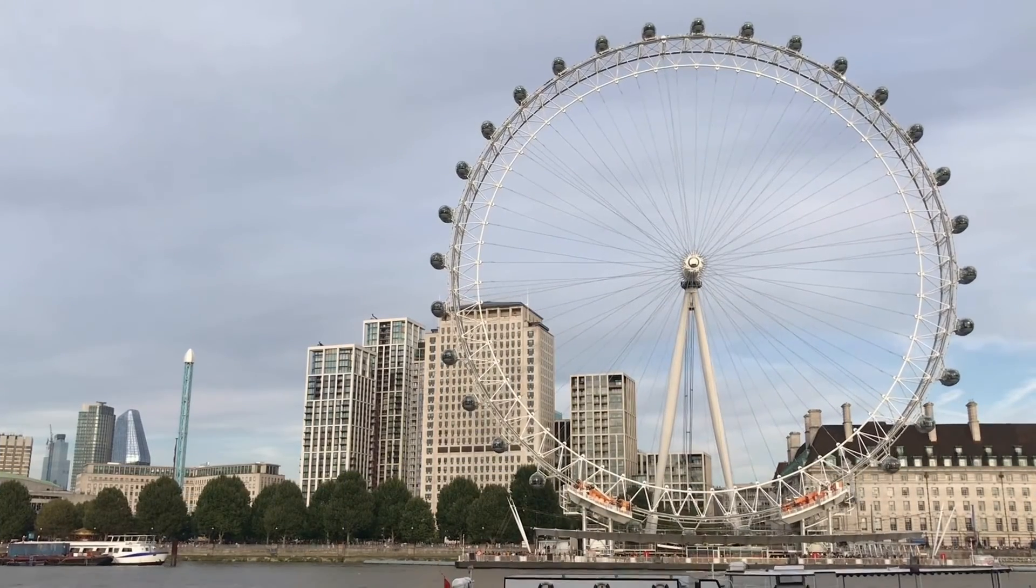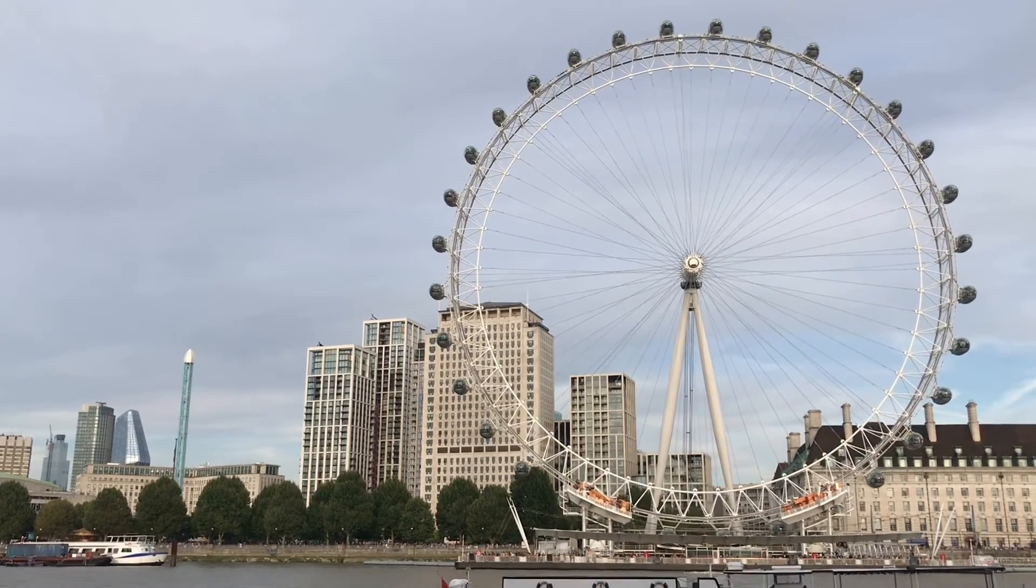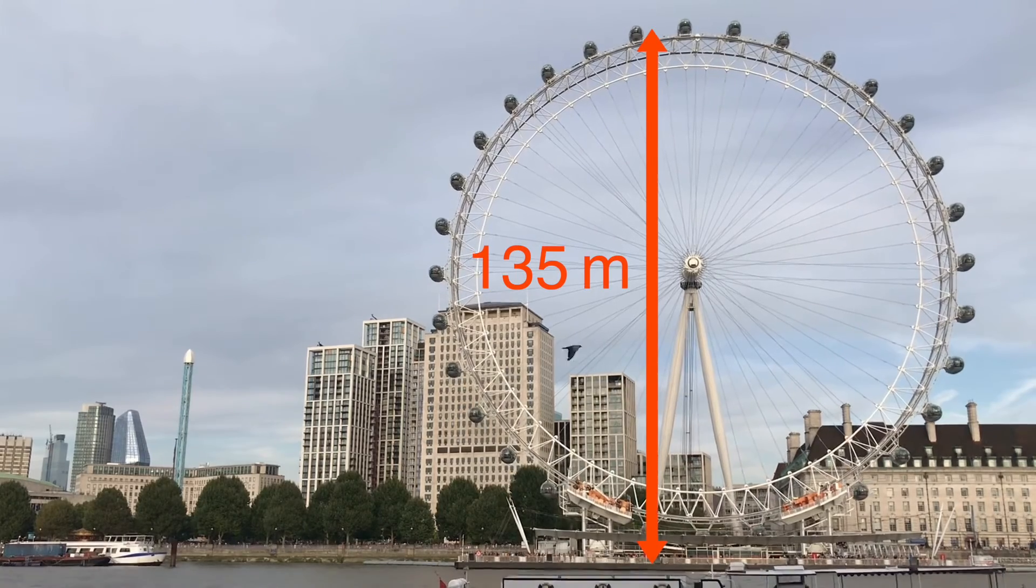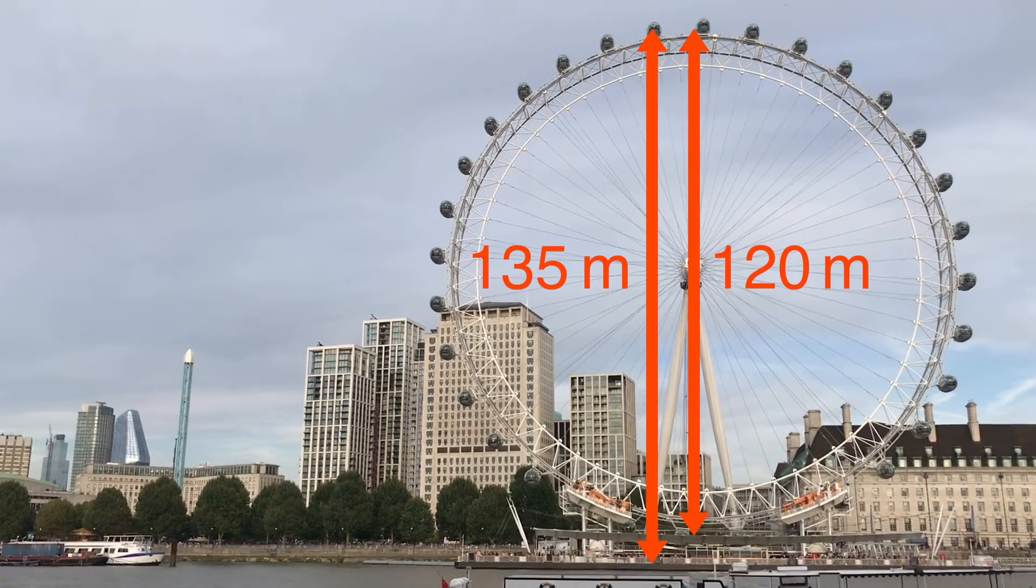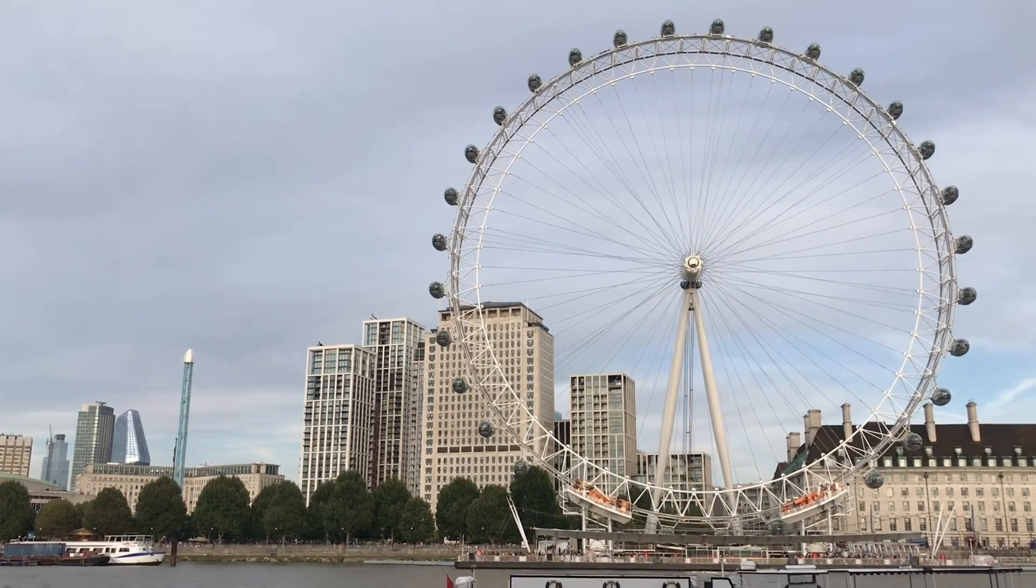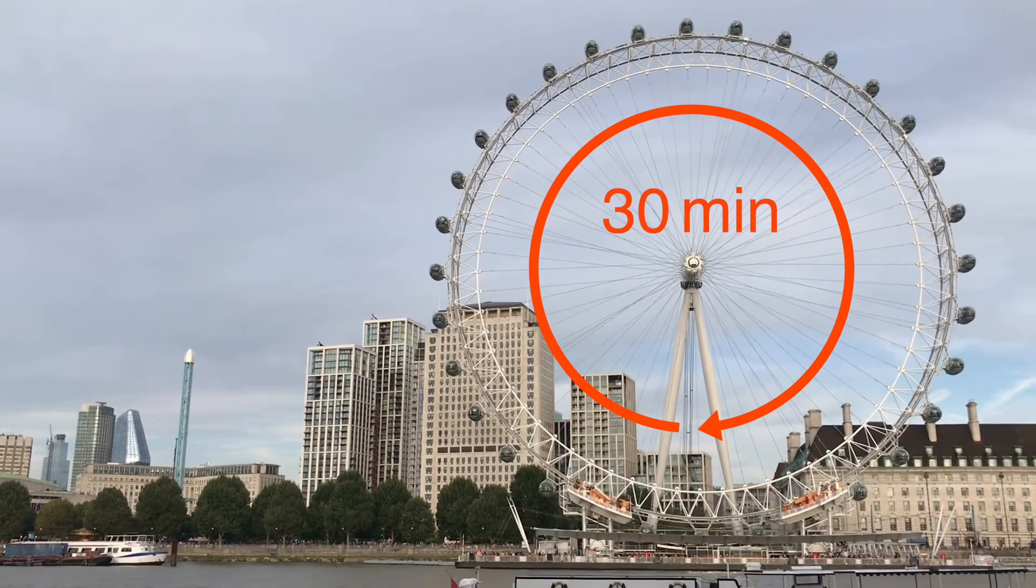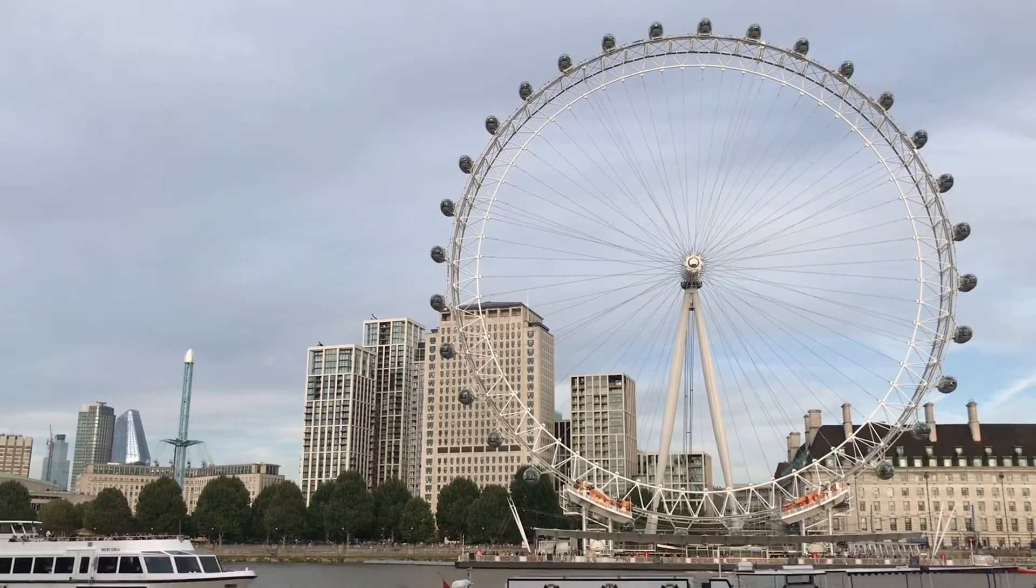Now to model the motion of riders as they revolve around, we're going to need to know a few numbers. The structure is 135 meters tall and the wheel itself has a diameter of 120 meters and it moves fairly slowly. It takes around 30 minutes to make one complete rotation. This video has sped up so it moves even more slowly than what you see here.